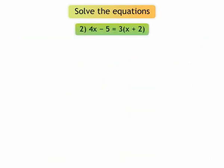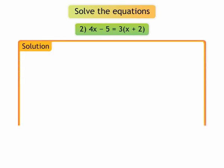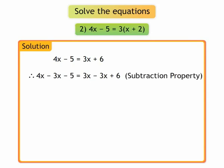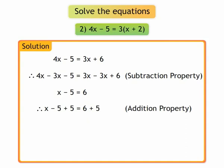2. 4x minus 5 is equal to 3 into bracket x plus 2. On opening the bracket, we get 4x minus 5 is equal to 3x plus 6. By using subtraction property, we get 4x minus 3x minus 5 is equal to 3x minus 3x plus 6. We get x minus 5 is equal to 6. By using addition property, we get x minus 5 plus 5 is equal to 6 plus 5. We get x is equal to 11. The solution to the equation is 11.